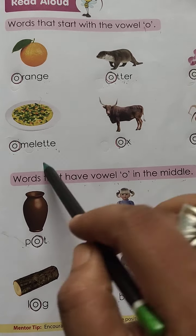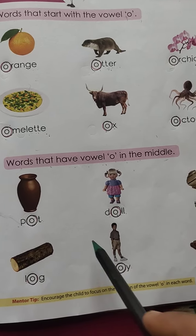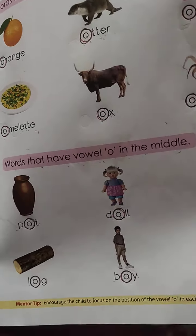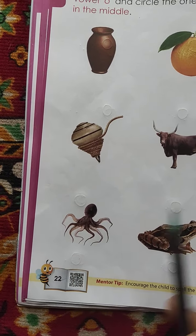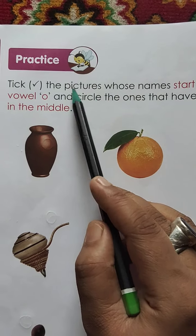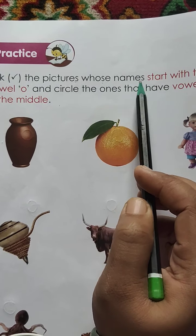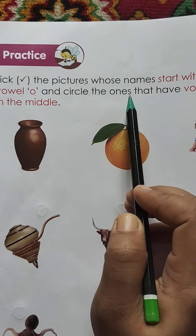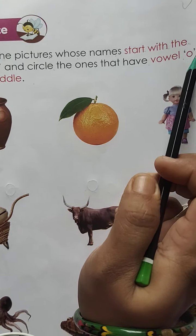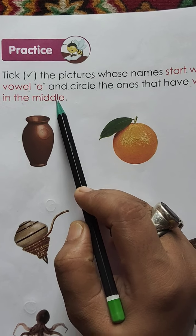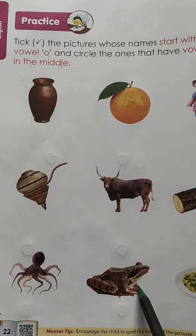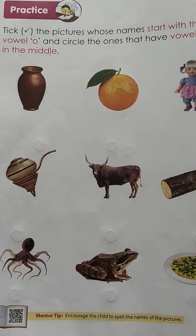Read these words and complete page number 22, which is: tick the pictures whose name starts with the vowel O, and circle the ones that have vowel O in the middle. Complete this page — this is your homework. That's all for today, thank you, have a nice day.